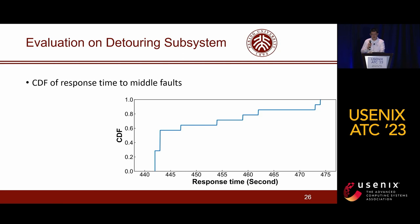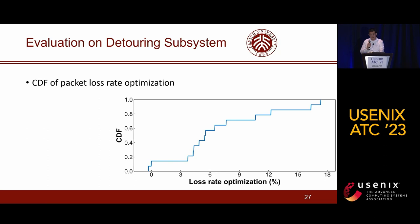For the detouring subsystem, we found that the response time to all middle faults is within eight minutes. Typically, the monitoring subsystem takes three to five minutes to identify and report a victim AS, the diagnosing subsystem takes three to four minutes to identify the category and direction, and the detouring subsystem takes less than 30 seconds to execute the traffic detour. For each middle fault, we compared the average packet loss rate of its associated victim AS before and after the cross-POP traffic detour is executed. We found that each traffic detour reduces the packet loss rate by up to 7% on average, with less than 10% of detours degrading packet loss rate by less than 0.5%.